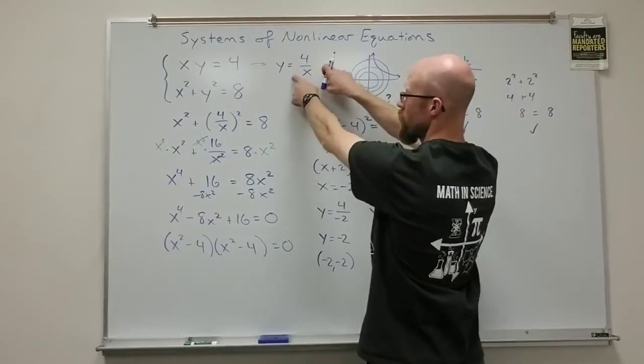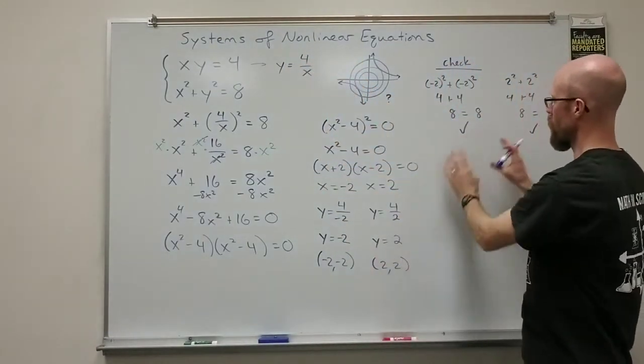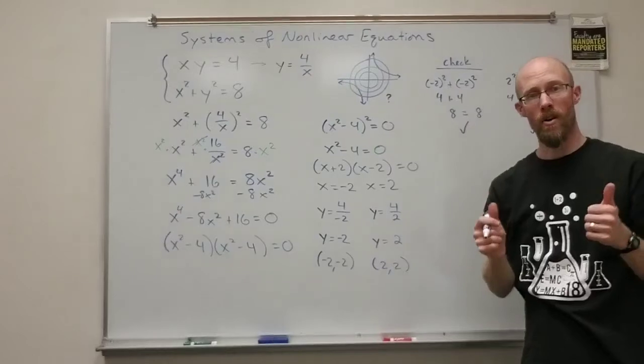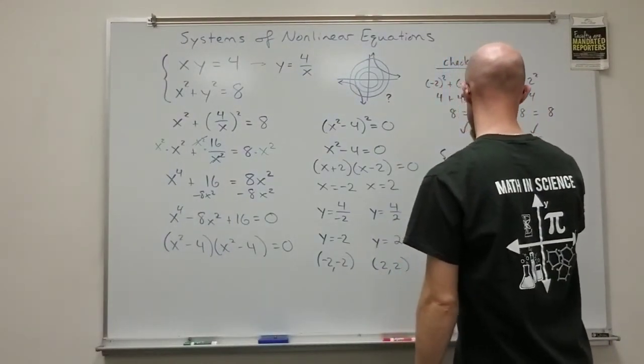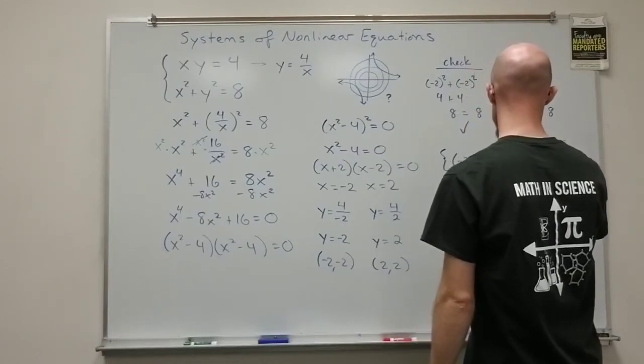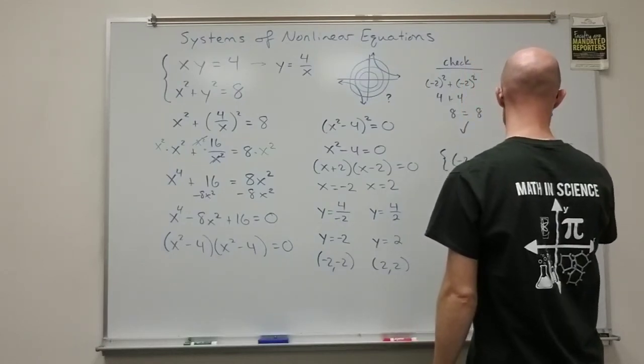So, I found them using the first equation, so they have to work there. Then, I checked them on the second equation. They are solutions, which means my solution set is going to be the ordered pair negative 2, negative 2, and the ordered pair 2, 2.